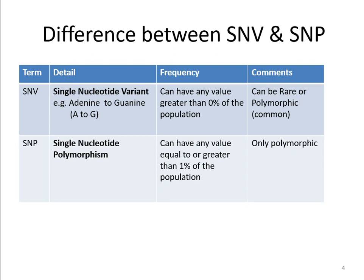SNV — Single Nucleotide Variant — for example adenine to guanine, as in the previous slide. Its frequency can have any value greater than zero percent of the population, so it can be rare or polymorphic. It is called an SNV whether the variation is present in even one in one hundred thousand individuals.